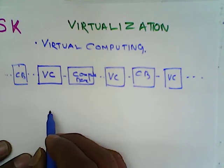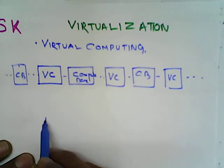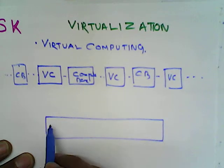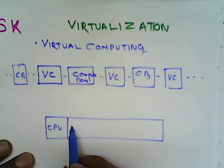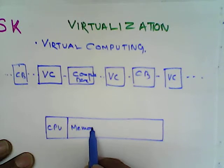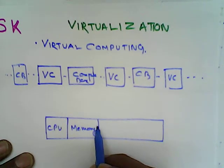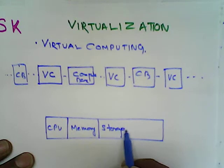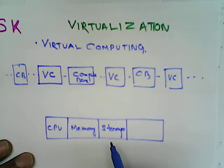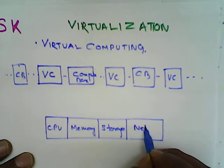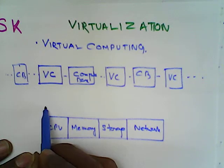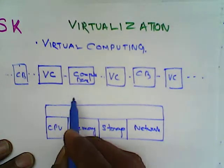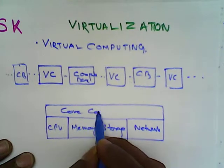That means, we have seen that whenever the resource management — what are the different resource management components we know — the resource management includes: one is CPU, using the CPU for multiple tasks; another is memory, the utilization of memory for various tasks; storage, the methods by which the CPU can store in various locations; and also networking, how various packets coming from various networks can be able to connect. So this entire thing is connected and put under one area.